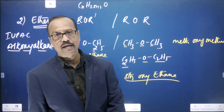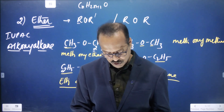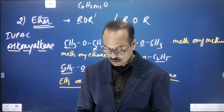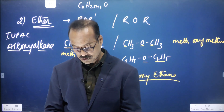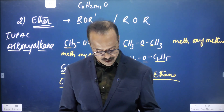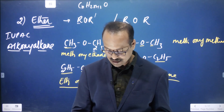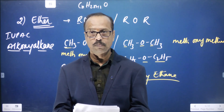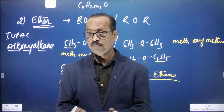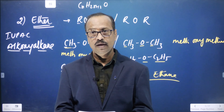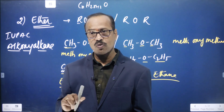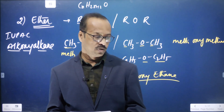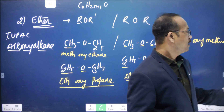With this we stop today. In the next class we will discuss aldehydes, ketones, carboxylic acid, and carboxylic acid derivatives, as well as cyanides and isocyanides. Today you practice the third synopsis — simple hydrocarbon nomenclature — and also alcohols and ethers. Almost all examples have been discussed. Bye, take care.